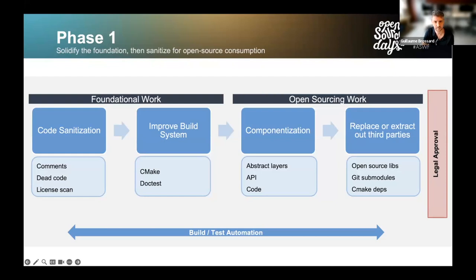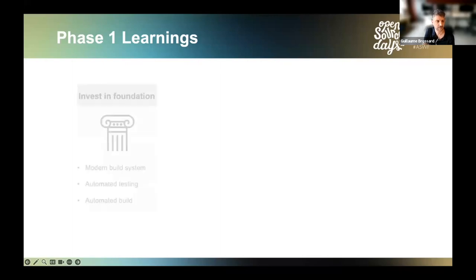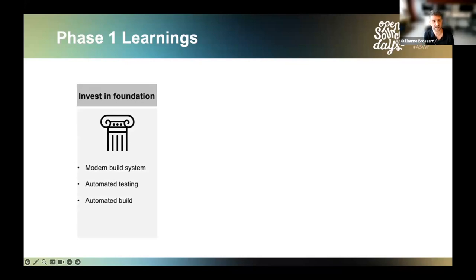There are key learnings from open sourcing RV. First, investing in product foundation pays off. Having an efficient, flexible, automated build system allowed us to meaningfully increase our velocity. When undertaking such a project, don't hesitate to strengthen your application core — it's going to pay off. Second, open sourcing early, even if the project is not completely complete, is a good thing. It forces ruthless prioritization and allowed us to release the first version of OpenRV earlier than expected.